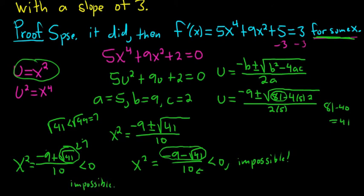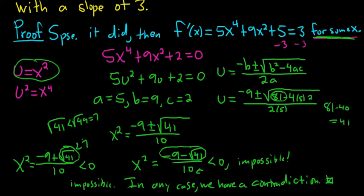So in any case, we have a contradiction, and so therefore the function does not have a tangent line with a slope of 3. We have a contradiction. I said a lot in words, but hopefully that made sense. That's it.